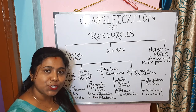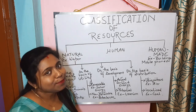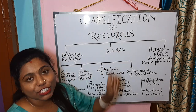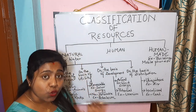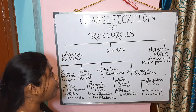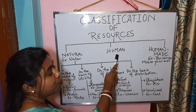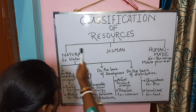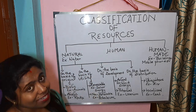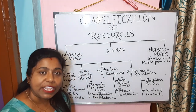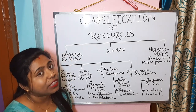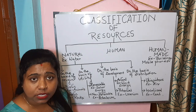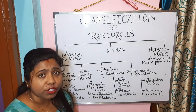I hope all of you understood the concept of resources. Now let us go ahead with the classification of resources. Resources are classified into natural resources, human resources, and human-made resources. Natural resources are the resources which are obtained from nature and are used without much modification — for example, water is a natural resource which we can utilize without much modification.